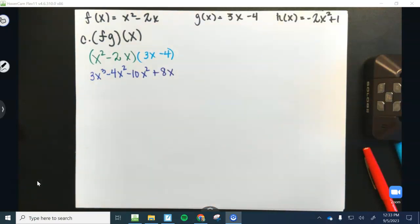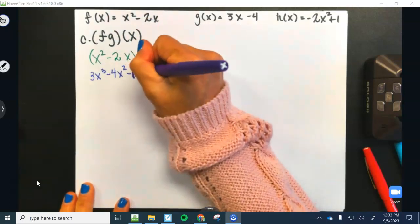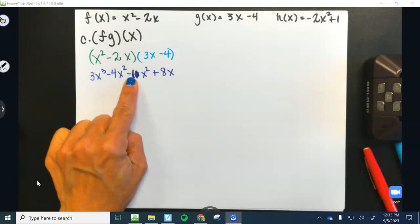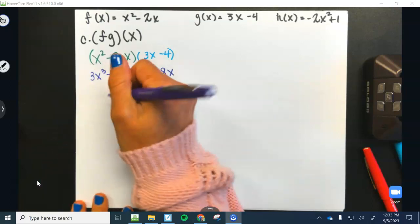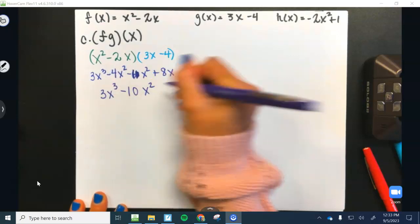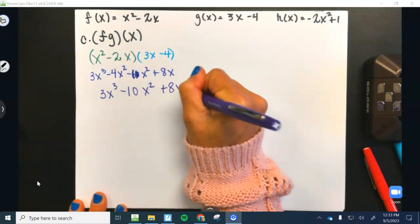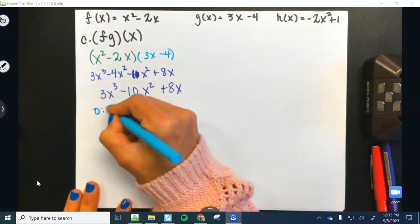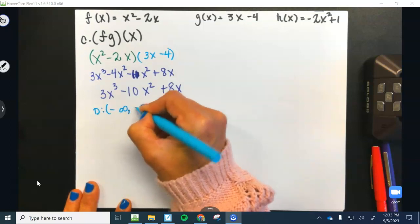Okay, so it looks like we just need to combine the two middle terms. So that's going to be a negative 4x squared minus a 6x squared. So we're going to have 3x to the third minus 10x squared plus 8x. And again, guys, just a reminder, the domain here was negative to positive infinity.